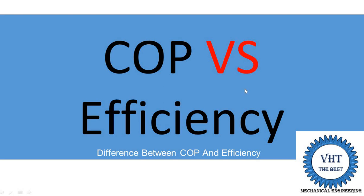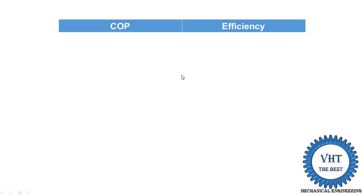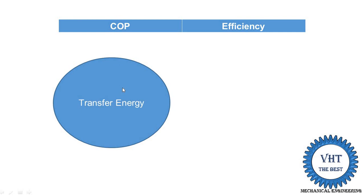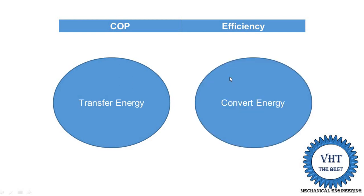The first point is that energy in any device is of two types: energy that is transferred and energy that is converted. COP is found out for devices that transfer energy, and efficiency is used for devices that convert energy. For example, in the refrigeration system, we are transferring the energy from the room to the surrounding, or from the surrounding to the room.